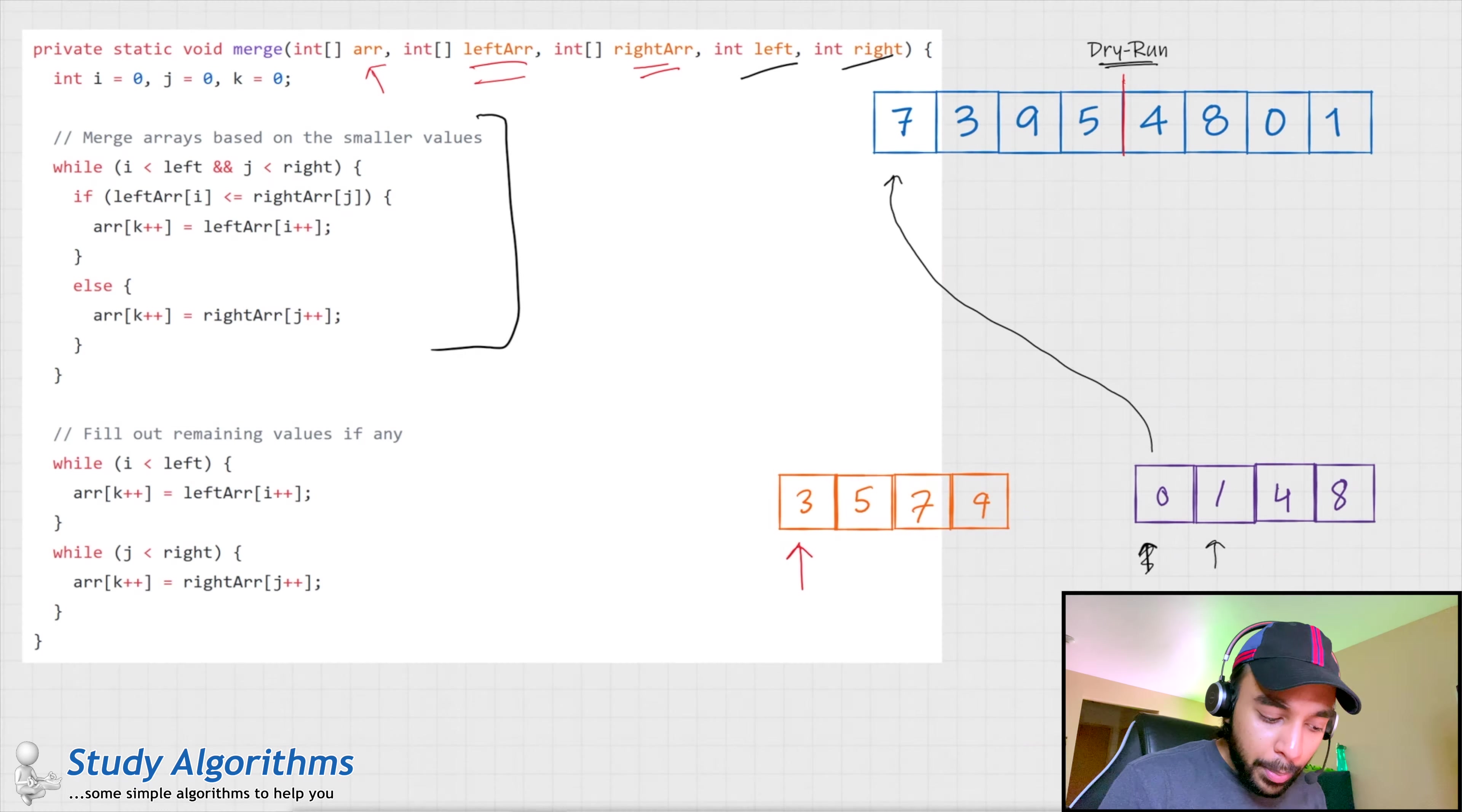Next, you compare 1 and 3. Since 1 is smaller, 1 would move at the next position. This pointer advances. Now, you compare 3 and 4. Since 3 is smaller, 3 goes over here and this pointer advances to 5. Now, you compare 5 and 4. Since 4 is smaller, it would go over to the next position. Similarly,